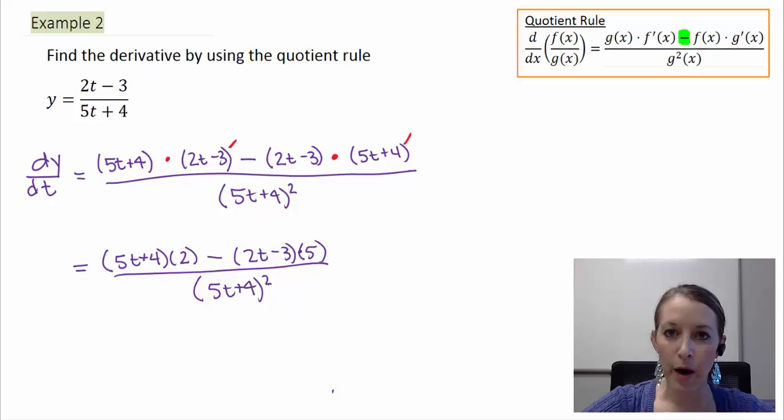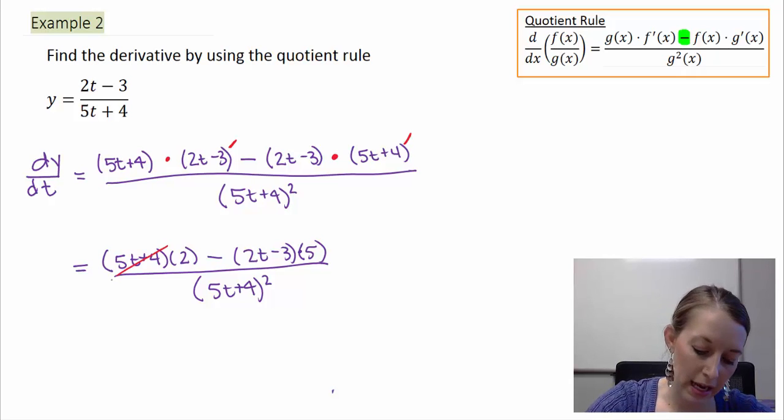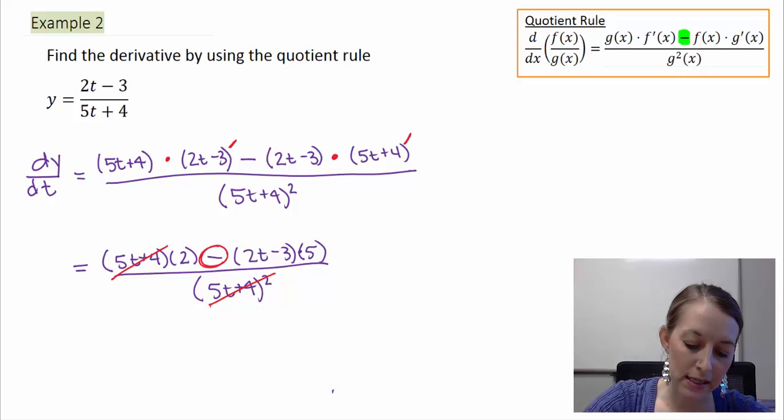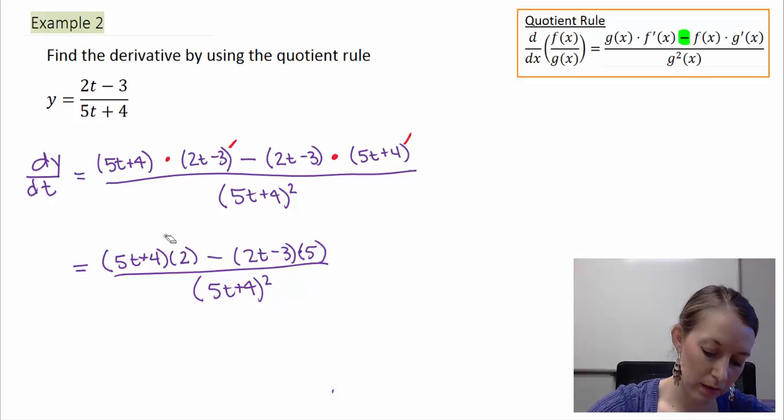Now, the derivative part was probably the easy part. The simplification part, or the algebra part, is probably the more complicated part. Some things to clarify here, because I see this a lot in the homework. Something you cannot do is I cannot come through and reduce those two pieces right there. We can only reduce fractions when it's in multiplication format. And since this is subtraction, that means we cannot reduce either of those two pieces at this time. So that's a big no-no.